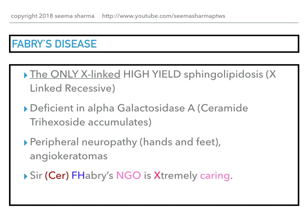My way of remembering this is: 'Sir Fabry's NGO is extremely caring.' The 'Cer' is for the accumulated substrate ceramide trihexoside. The F and the H — Fabry's spelled with an H — remind you that the feet and hands are affected by peripheral neuropathy. N-G-O is for angio, carine is for keratoma, and the X in extremely reminds you this is the only X-linked high-yield sphingolipidosis.